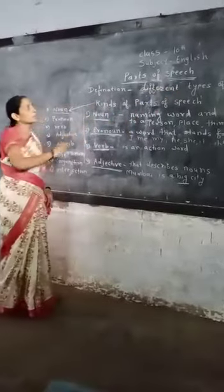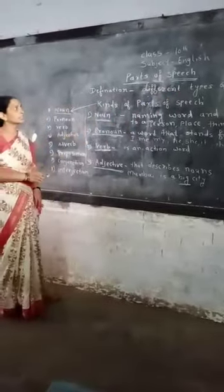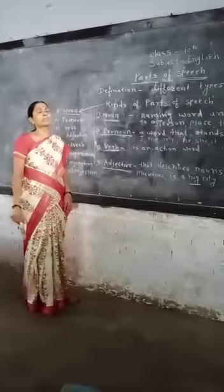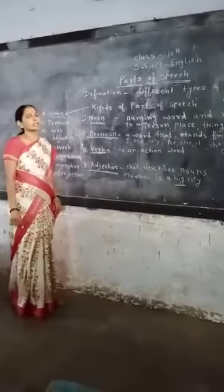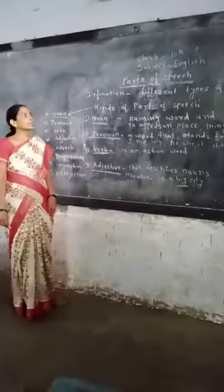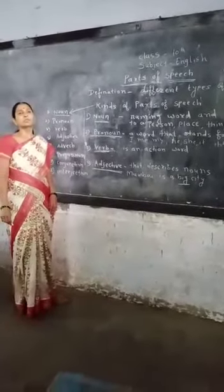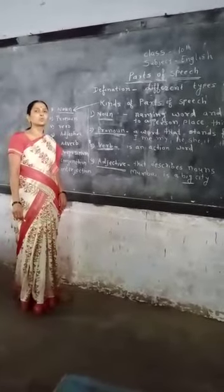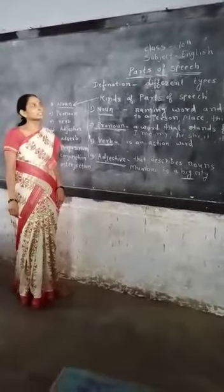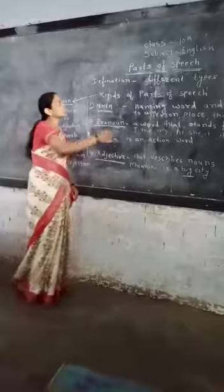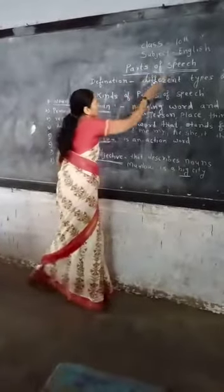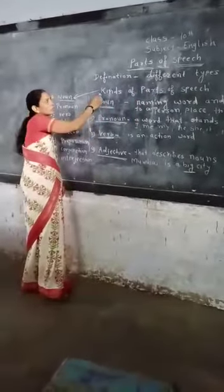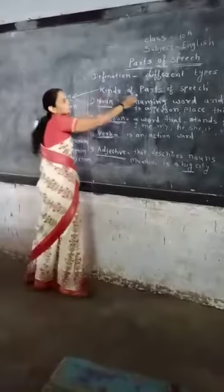The definition of part of speech is: part of speech is a different type of words. When we speak with others, at that time we use many different types of words or group of words. These words are called parts of speech. There are eight types of part of speech.